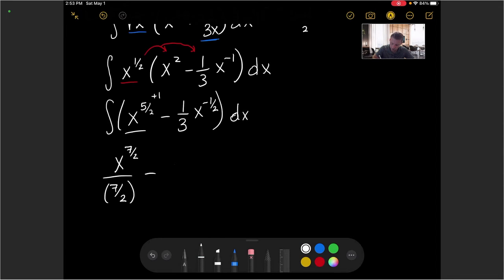Plus, or we'll have a minus 1 third out in front. The constant doesn't change. And then we'll have x raised to negative 1 plus 1, and the power there is going to be positive 1 half, and then we'll divide by 1 half. And then plus c for our integration constant.